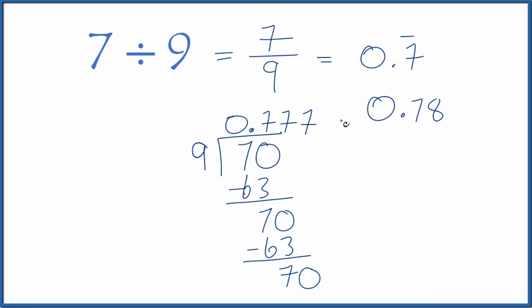And you can see the 7's just keep repeating. So 7 divided by 9 is 0.777, with the 7's repeating. You could write it 0.7 with a bar to show that, or if you rounded 0.78 would be a decimal.